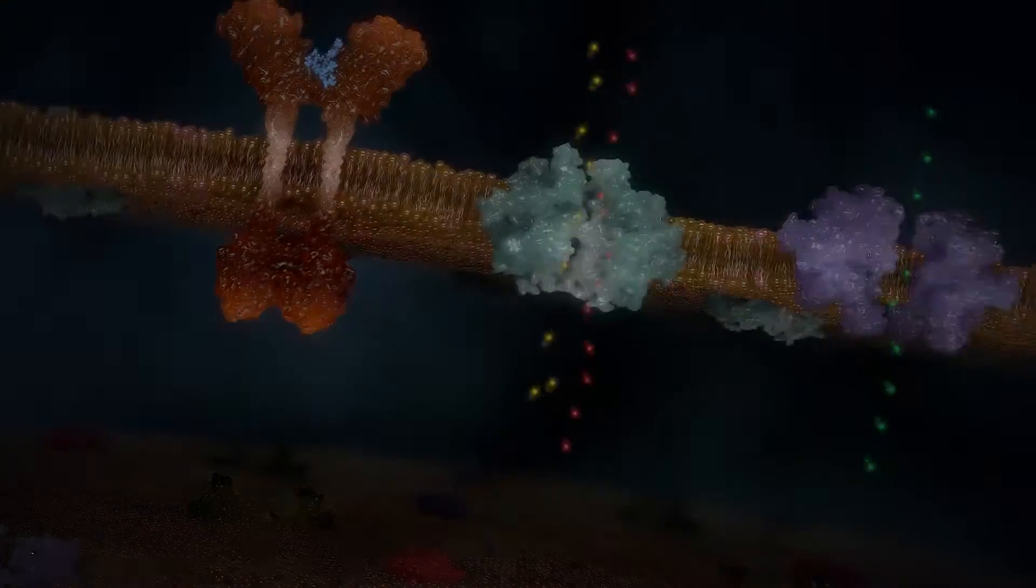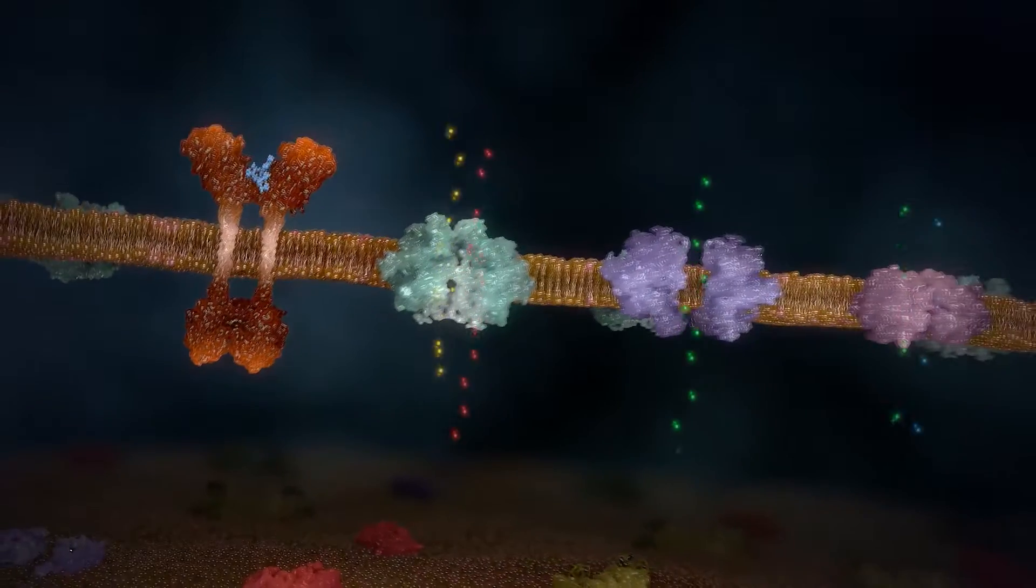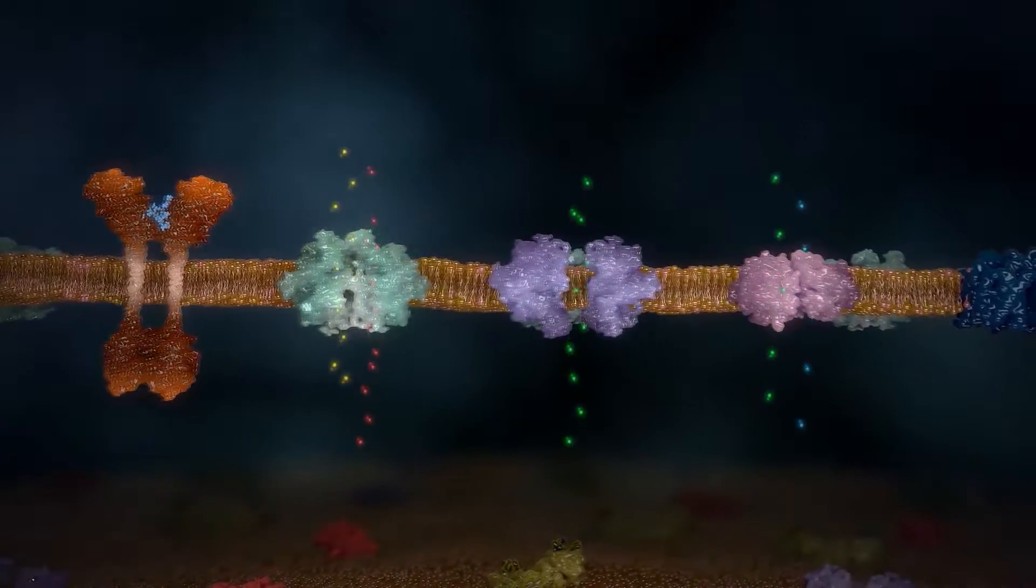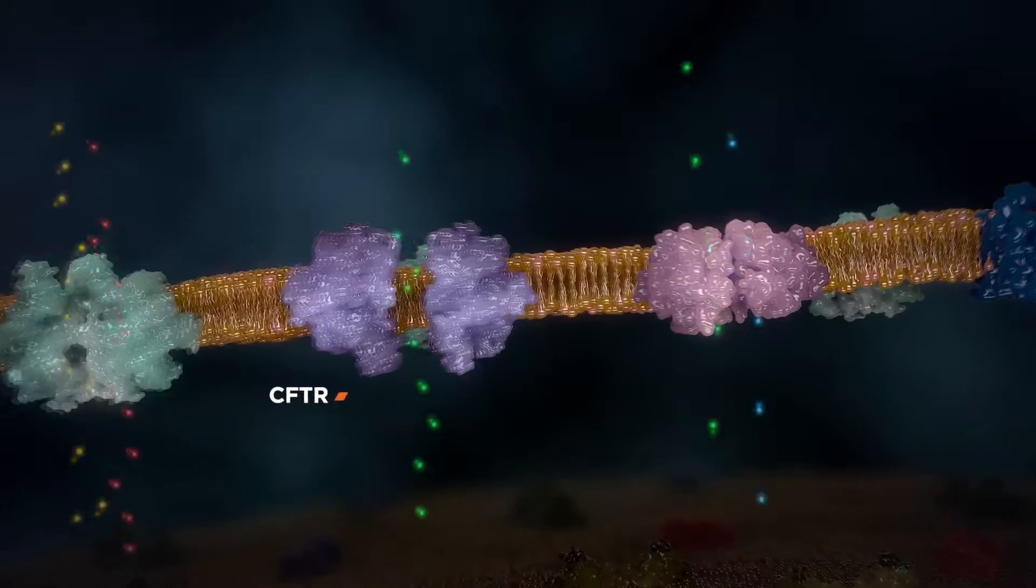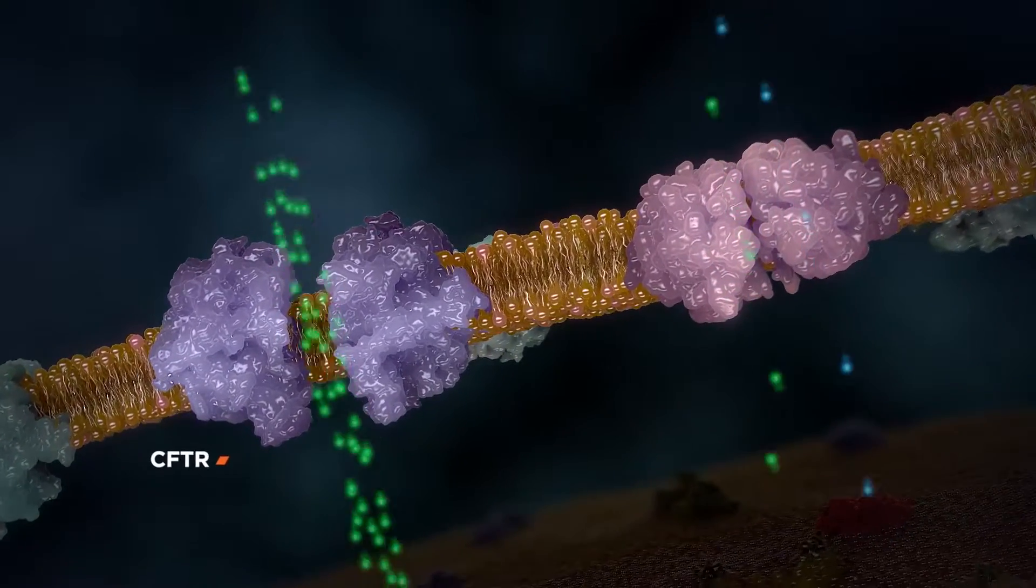This results in activation of cystic fibrosis transmembrane conductance regulator, or CFTR, which results in secretion of chloride into the intestinal lumen.